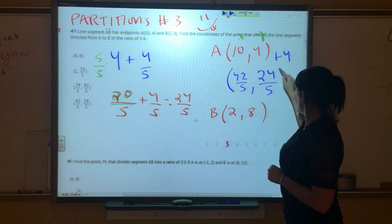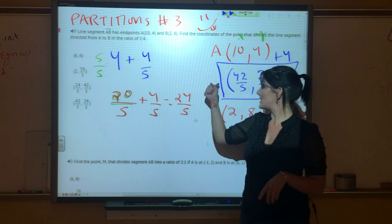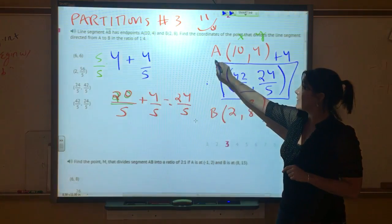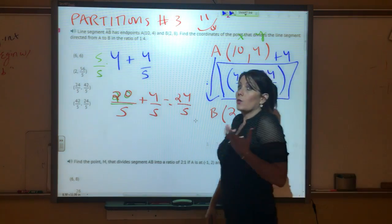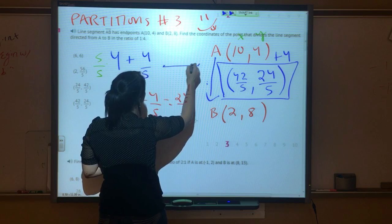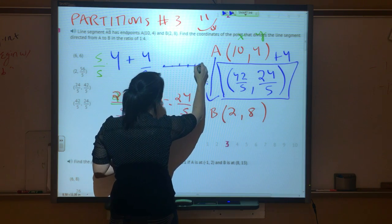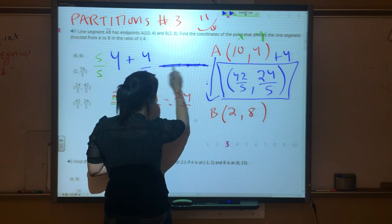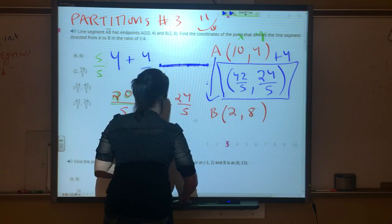So this is the point that is one-fifth of the way from here to here, or you can say it is the point that partitions this line segment in a ratio of 1:4. I hope you get it. I hope you enjoyed my lesson on partitions. Good luck on your assignments. Crazy K's out.